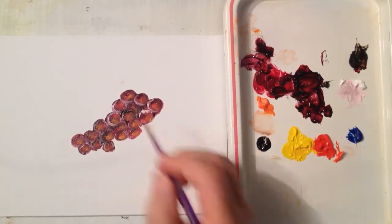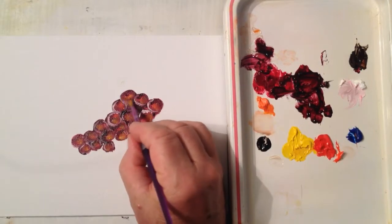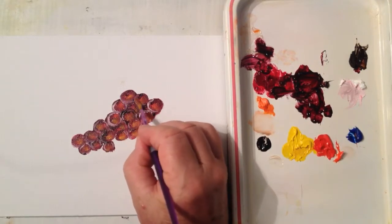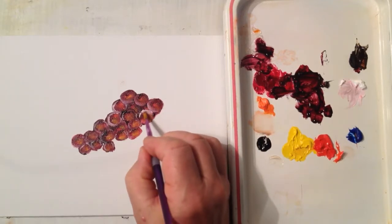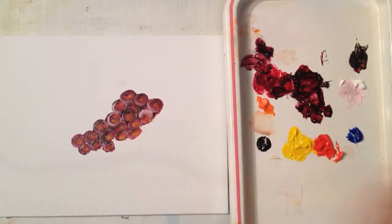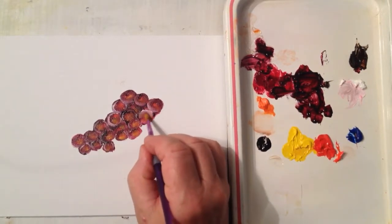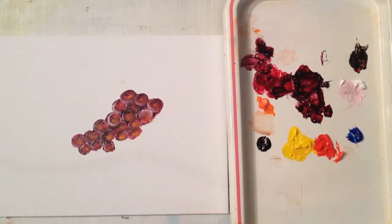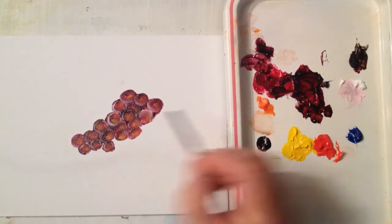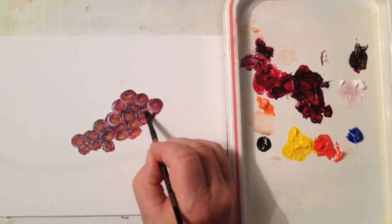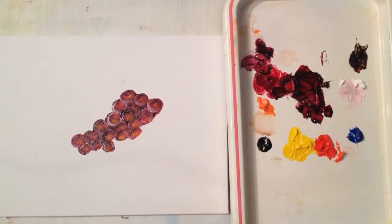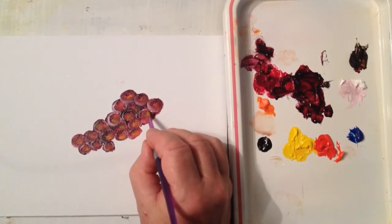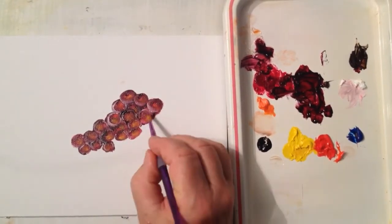Next, we're going to blend that white into the grape. If it comes too much white, go back to your black, or your blue and your red, and just build the top of the grape like so. Then go ahead and blend.